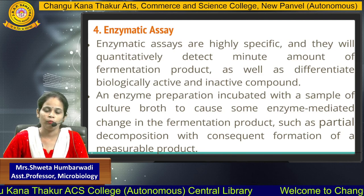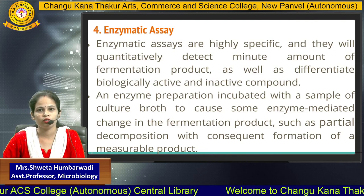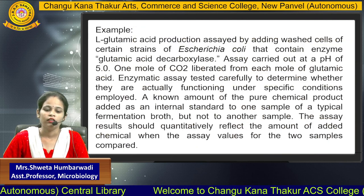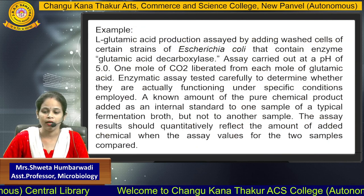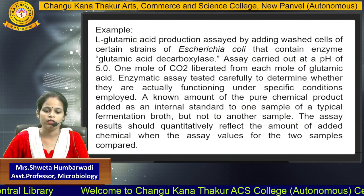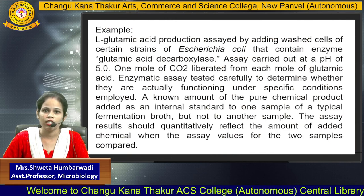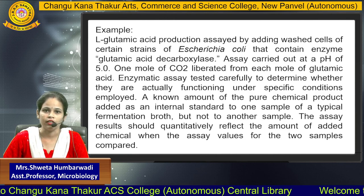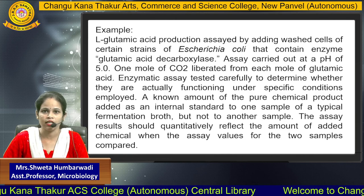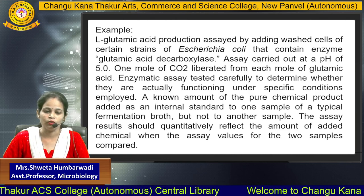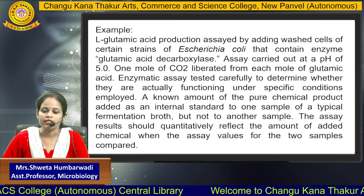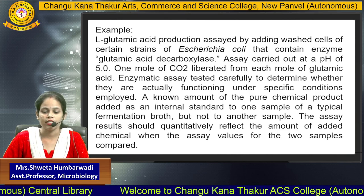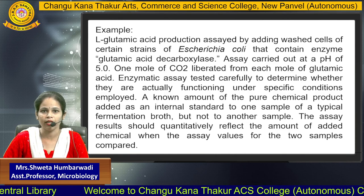Here our product is converted into a different product through the enzyme. For example, glutamic acid assay production is assessed by adding washed cells of certain strains of Aceratia coli. This Aceratia coli produces glutamic acid decarboxylase enzyme, which acts on glutamic acid. The assay is carried out at a pH of 5.0, and one mole of carbon dioxide is liberated from each mole of glutamic acid.